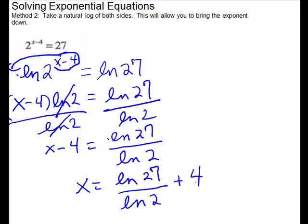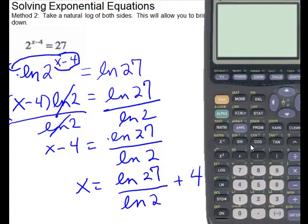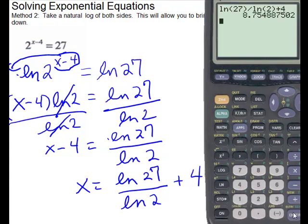My math lab will ask you for two answers. First, it will ask you to answer in terms of natural logs, which means you would leave it in this form. And then they're asking for the answer to be rounded to two decimal places, so we'll put that into our calculator. So we'll have the ln of 27 — make sure that you close your parentheses — divided by the ln of 2, close parentheses, plus 4, enter. And so we have 8.754; to two decimal places, 4 is not high enough so you're going to drop it off and we'll have 8.75.